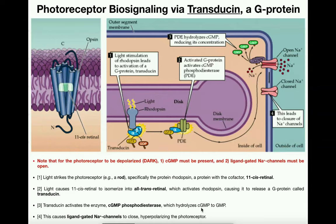So cyclic GMP is going away — that's one factor that helps us perceive light, because we can't have cyclic GMP present in light; it can only be present in the dark. That cyclic GMP was actually keeping these sodium channels open, so sodium was rushing into the photoreceptor cell, causing it to depolarize. In the dark, the photoreceptors are depolarized due to the continuous production of cyclic GMP, which opens these ligand-gated sodium channels.